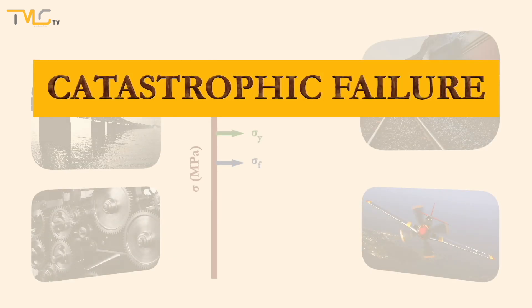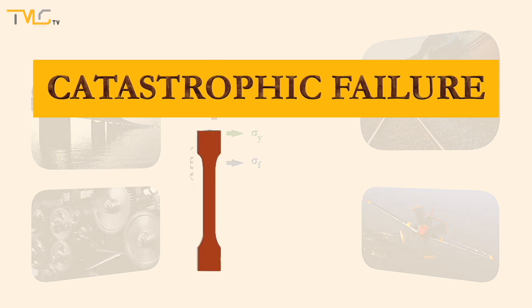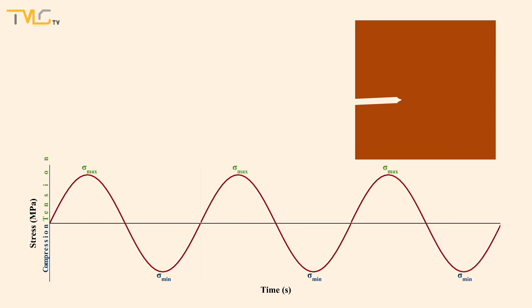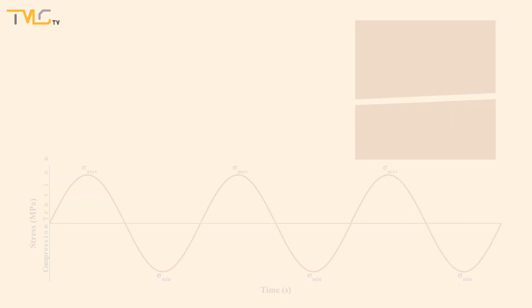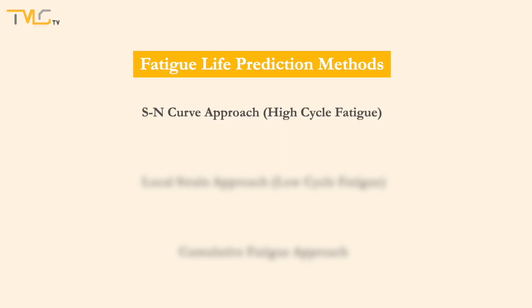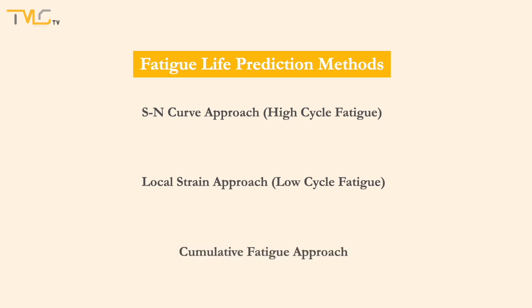Catastrophic failure is not desired for any material or structure, especially when under service. Considering the majority of material failures taking place due to fatigue failure, various fatigue testing methods are developed and employed to predict fatigue service and fatigue lives of components. In this video, three of the major approaches employed for fatigue life prediction — the SN curve approach, local strain approach, and cumulative fatigue damage approach — will be investigated.